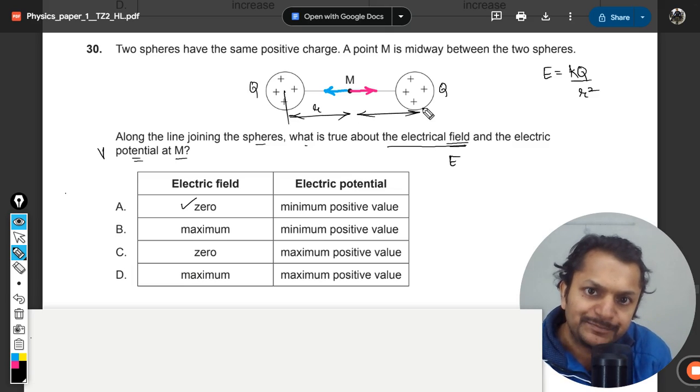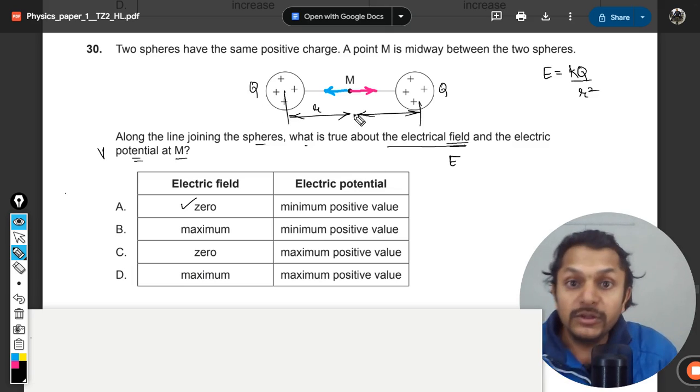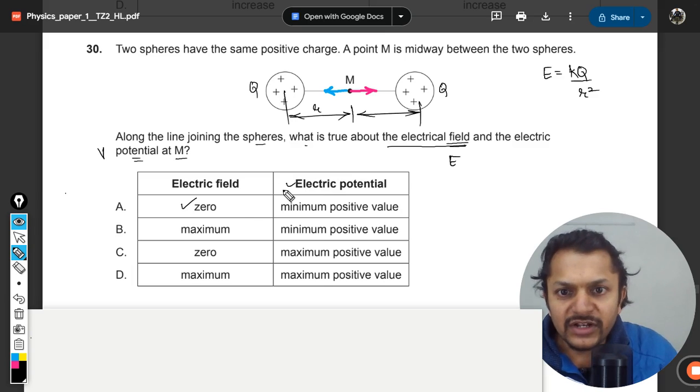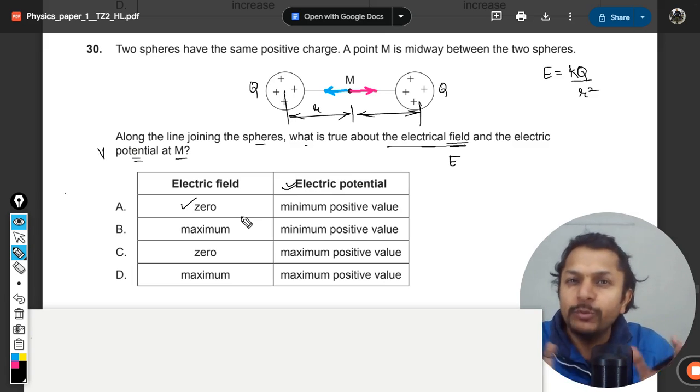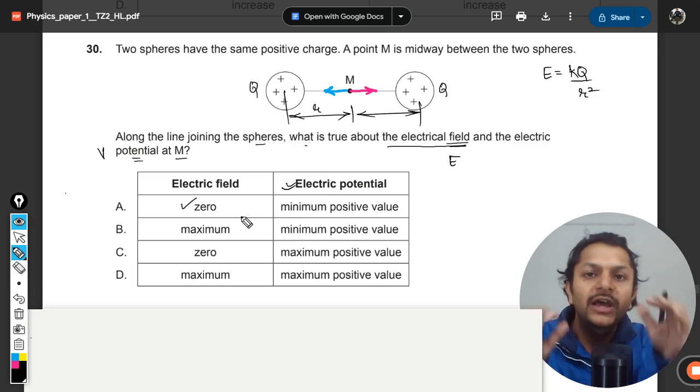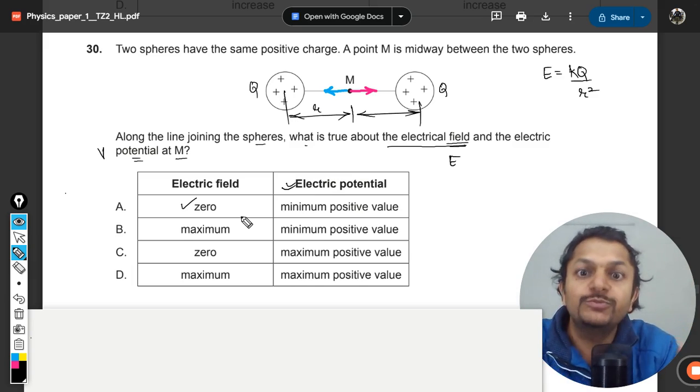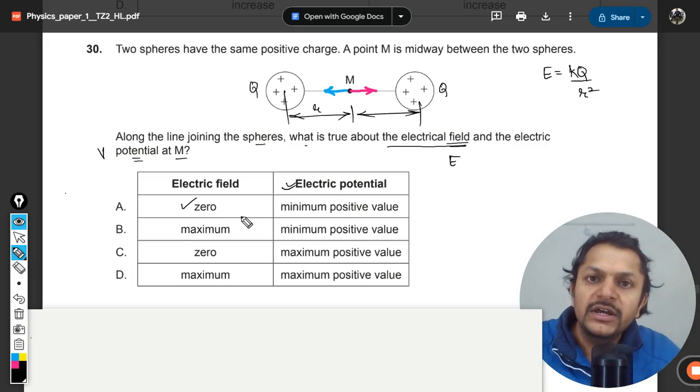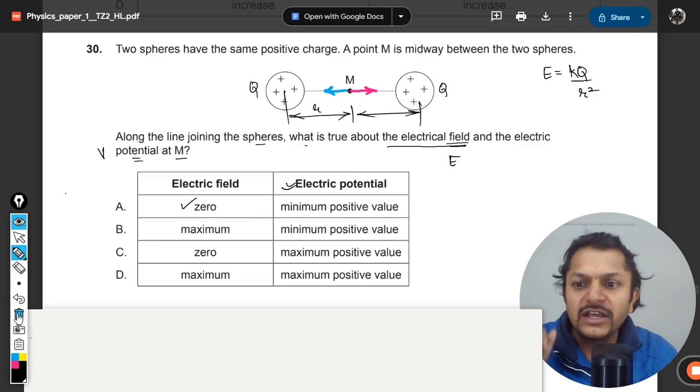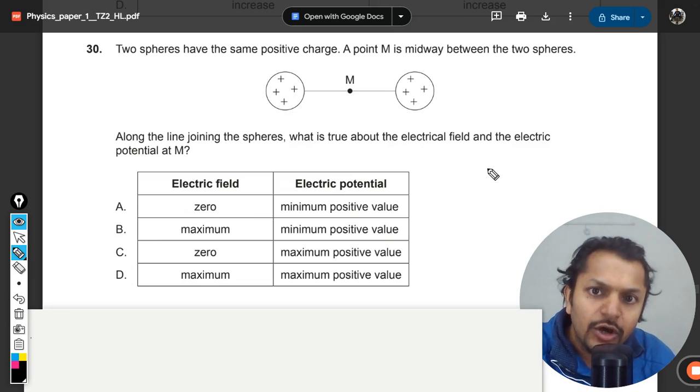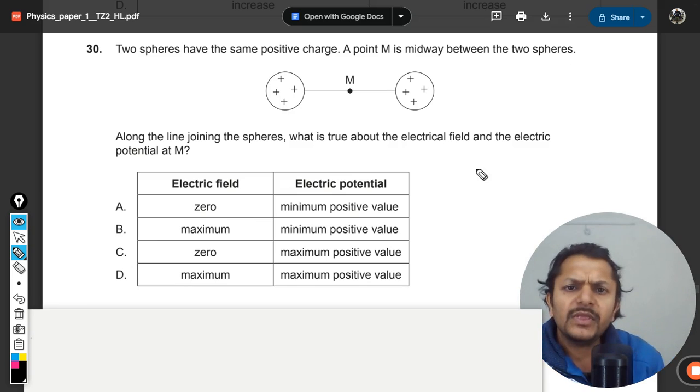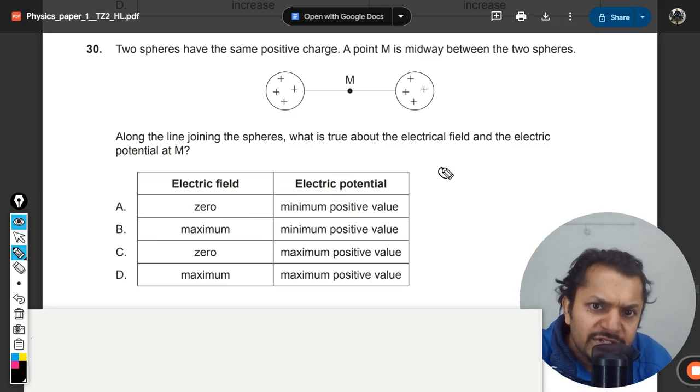Now what about the potential? Potential is a bit dicey, but we've done so many questions from paper two regarding electric potential using a similar concept. You should be good with this, but anyway let me explain. What's happening is, let's say this is charge one and this is charge two.